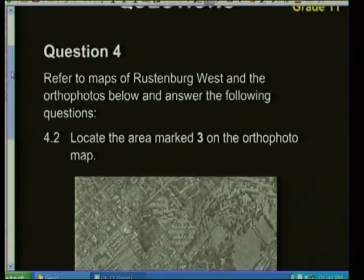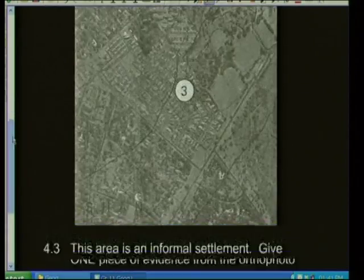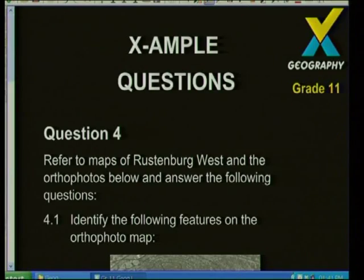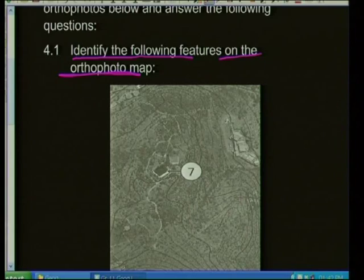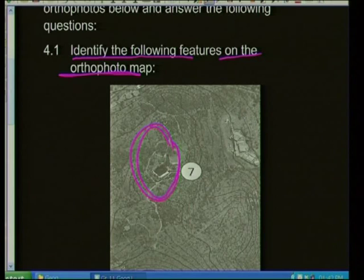Identify the following features on the auto photo map. Referring to the photograph — you would never know what that is just from the auto photo. But if you compare it to the map, it was a map of Rustenburg. Looking at feature number seven: if you orientated your map, it's actually a slimes dam. Number twelve: you can see little trees but weren't sure what it was — but when you orientated it, it is a golf course.